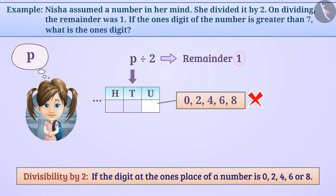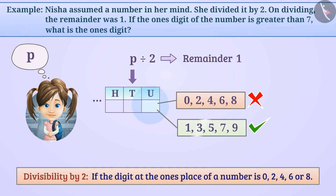This means that 1, 3, 5, 7, or 9 can be at the 1's place of P, but we are given another restriction that the 1's digit of P is greater than 7. We know that a digit greater than 7 can be 8 or 9, but since 8 cannot be present at the 1's digit, we can say that the 1's digit of P will be 9.